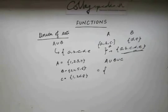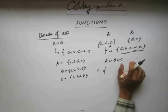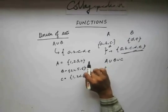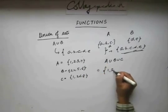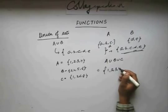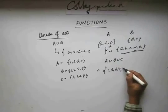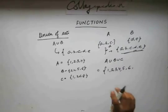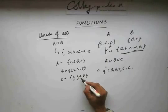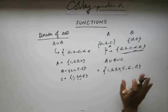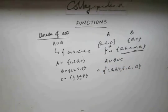Going by the definition of union of sets, A union B union C should have all elements which are either in set A, set B, or set C. So we write 1, 2, 3, 4 from set A. Then from set B, 2 and 4 have already been taken, so we add 5 and 6. From set C, 1, 2, and 6 are already accounted for, so we add A. This is what A union B union C is.